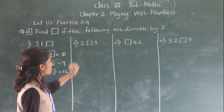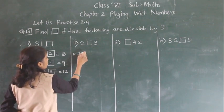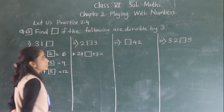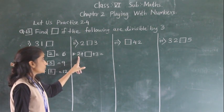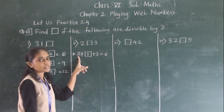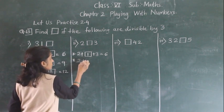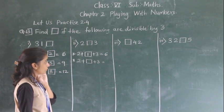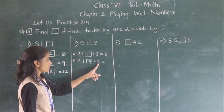Now let's solve the next example. Looking at a new number: 2 plus some digit. 3 plus 2 is 5. 5 plus 1 is 6. And 6 is divisible by 3. So here the first answer is 1. Then, 2 plus which number will come in the place of box? 1 plus 5 is 6, 5 plus 4 is 9 — yes.